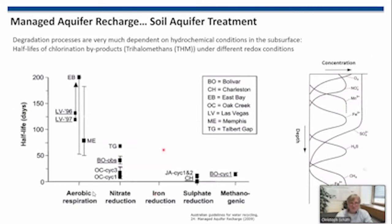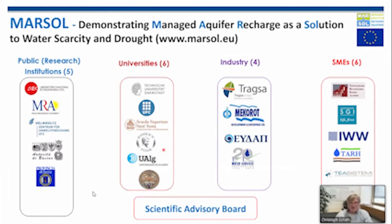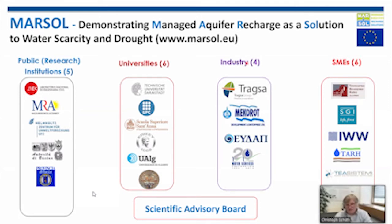The project I would like to show you is called MARSOIL — Managed Aquifer Recharge as a Solution to Water Scarcity and Drought — carried out from 2013 to 2016–17. The project had many partners from public research institutions, universities, industry, and small and medium enterprises. The topic of MAR is complex, so you need universities for theoretical background, public research institutions for scientific backup, and industry because they ultimately apply these technologies.